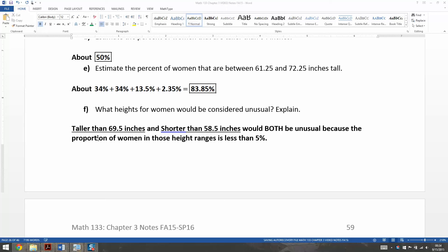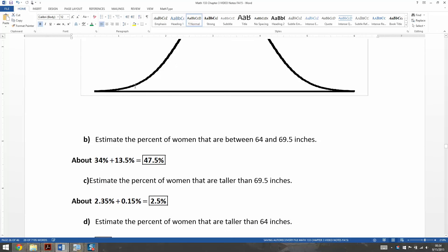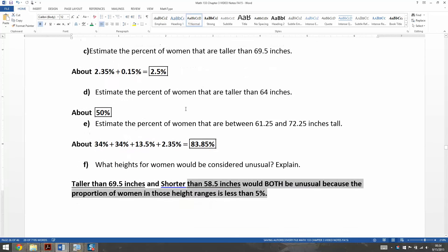Before we move on to the last example, just a quick note that since I originally made that last video, I changed the question so it says what heights for women would be considered unusual. In the video I showed taller than 69.5, but I added a note - it's also shorter than 58.5 because they're both unusual. They're less than 5% in those two ranges. One's at the high end and one's at the low end of the graph.